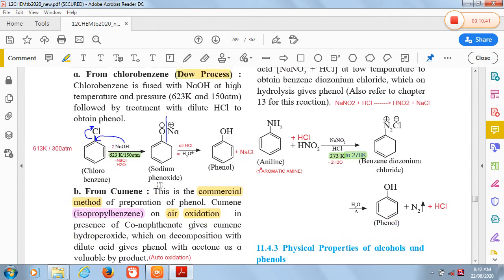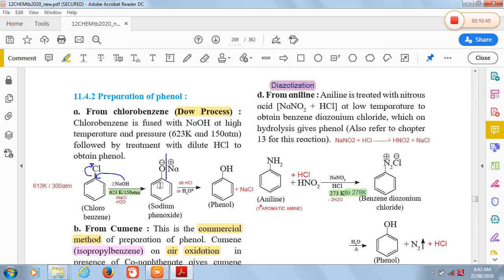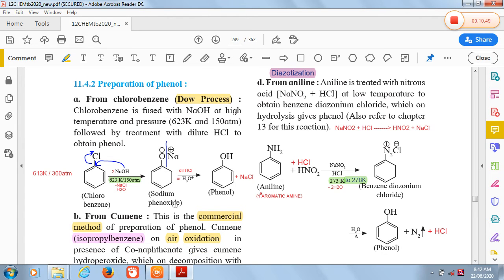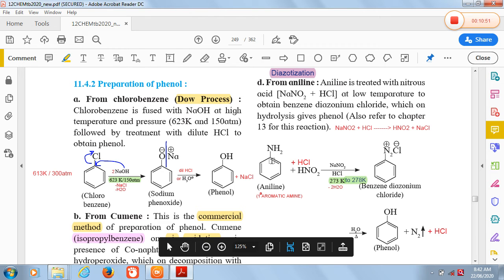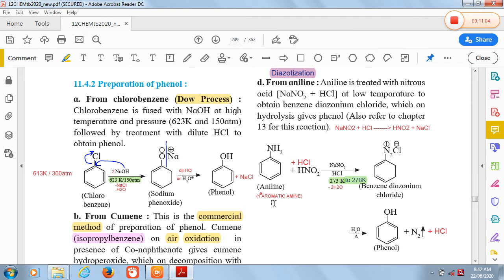Then next one is from aniline. Aniline has NH2 group attached to benzene ring carbon, so it is a primary aromatic amine. Remember that only primary aromatic amine such as aniline or aminobenzene shows this reaction, and the name of the reaction is diazotization. Only primary amine, whether it is aromatic or aliphatic, shows diazotization reaction. This is an important point for NEET exam.